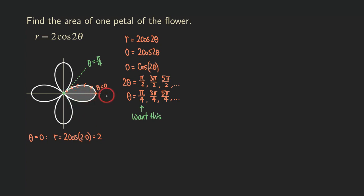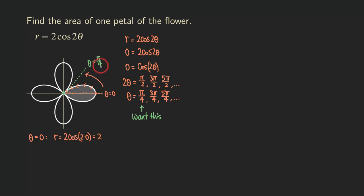If you start from theta equals 0 right here and sweep out in this direction, you will trace out the curve given by this function. As we increase from theta equals 0 to theta equals pi over 4, to find the area of this region — just the area for half of the petal — we only need to integrate from 0 to pi over 4. That's how we figure out the interval for the integration.